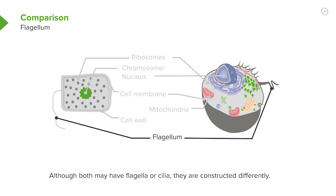Both have ribosomes, although prokaryotic and eukaryotic ribosomes are slightly different — we'll explore those in further lectures. In general, a eukaryotic cell is about 10 times larger than a prokaryotic cell.